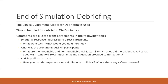I've used the clinical judgment model for debriefing and I've scheduled 35 to 40 minutes. Comments are elicited from the participants using topics in this model. The first is the emotional response — I would ask the participants who actually interacted with the mannequin: What went well? What did they like? What did they wish they could do differently? What were their feelings in the simulation? What was the scenario about? What are modifiable and non-modifiable risk factors? Can they identify which ones the patient had? What does FAST stand for and why is it important? How important is stroke education to a patient?